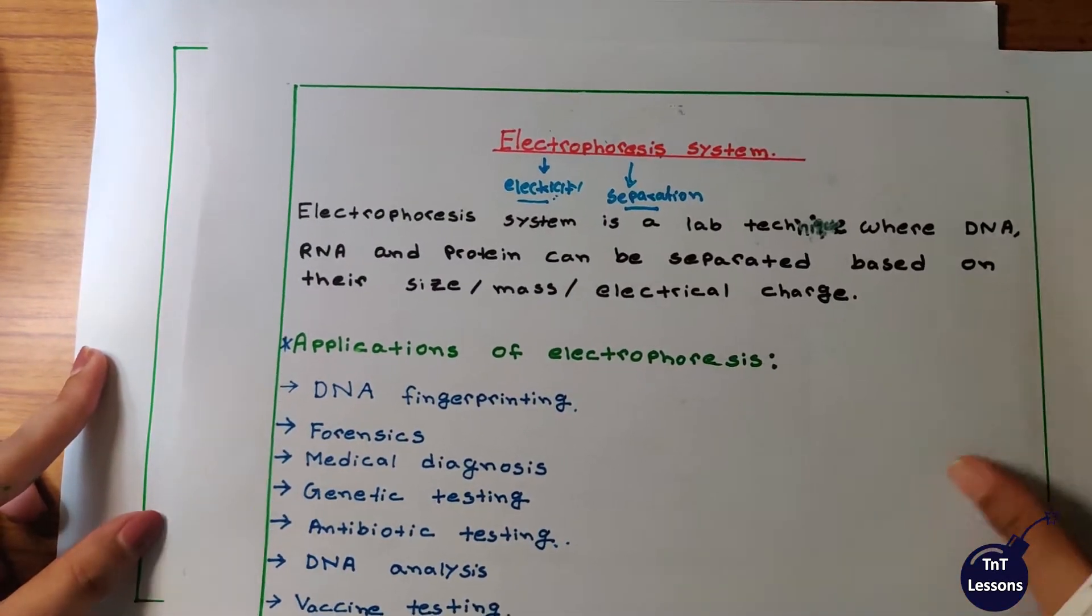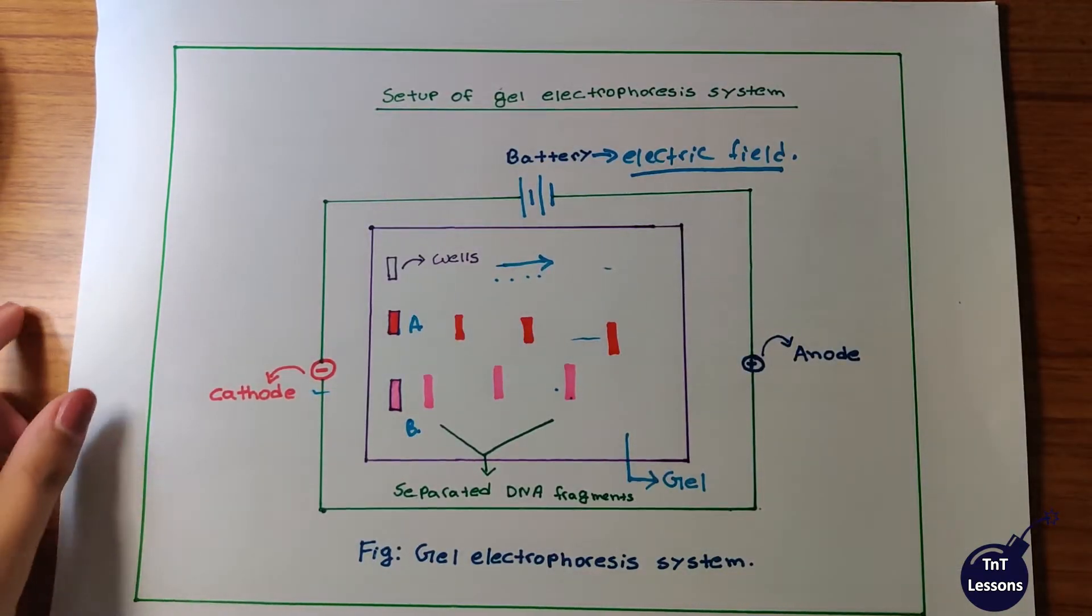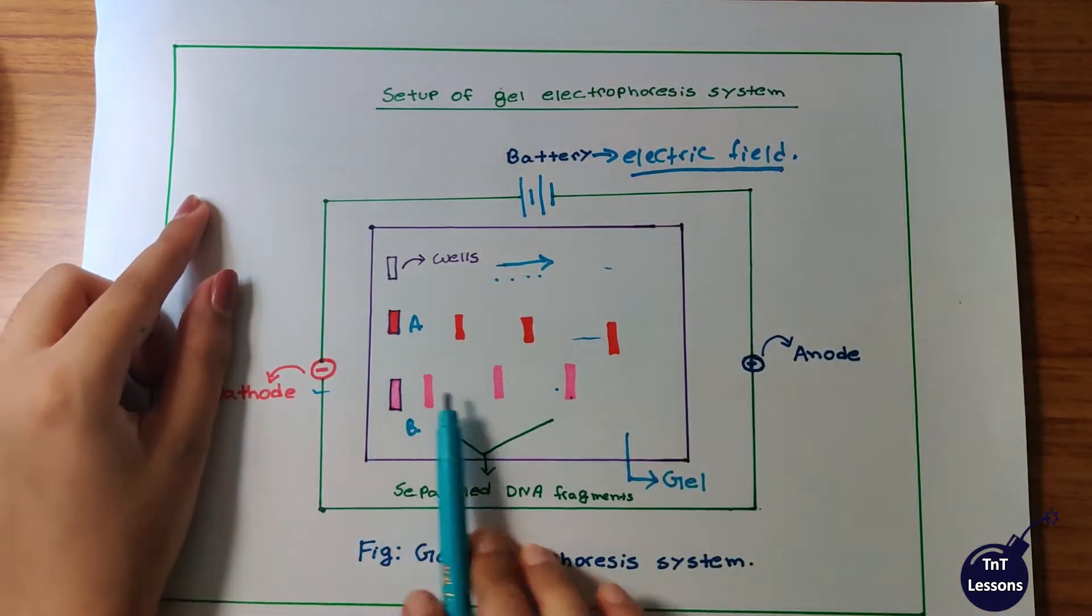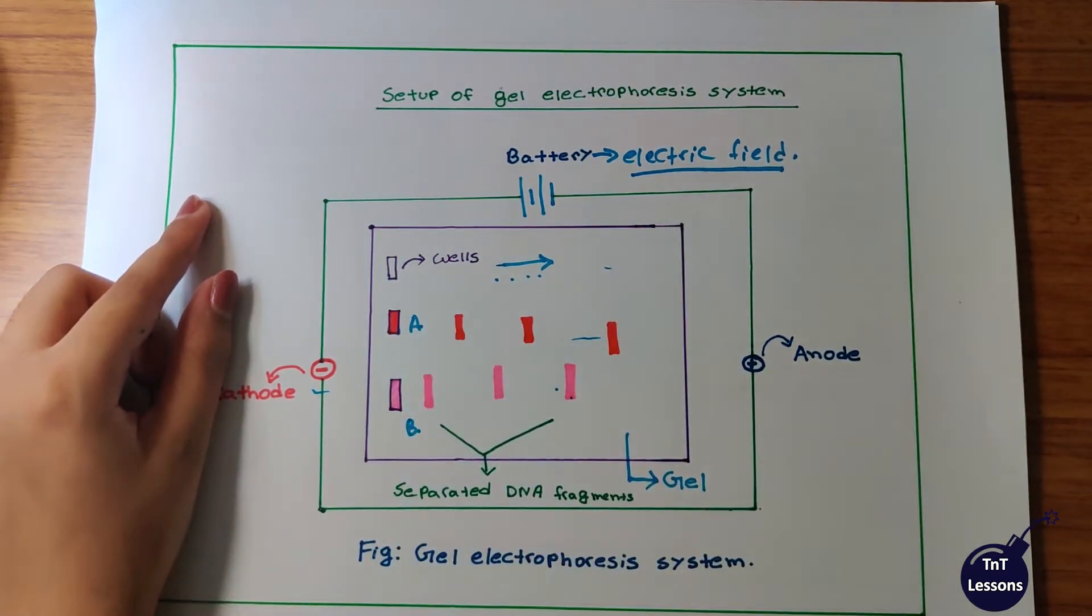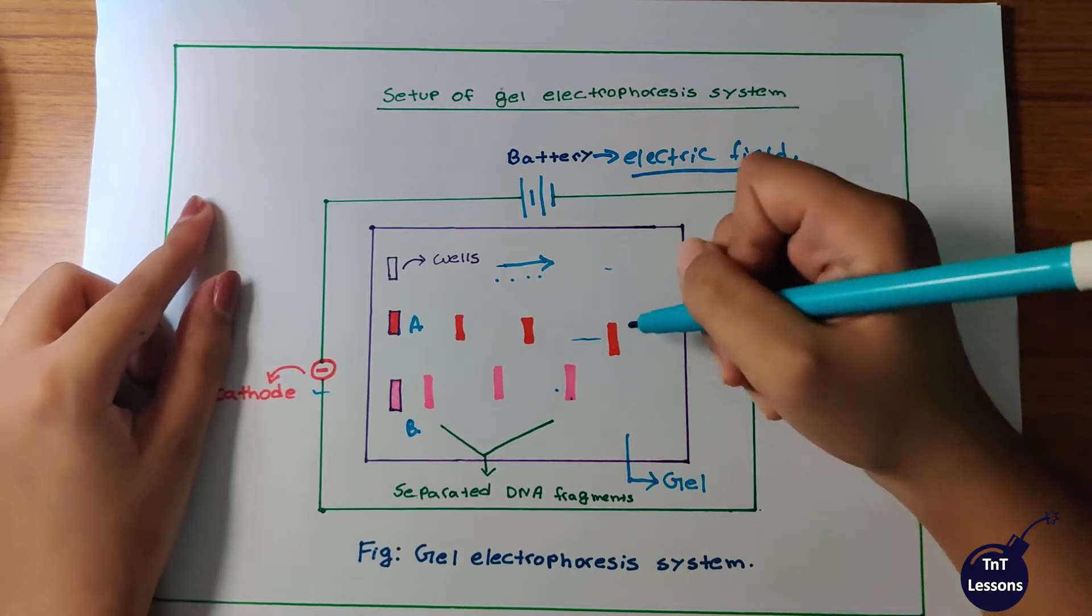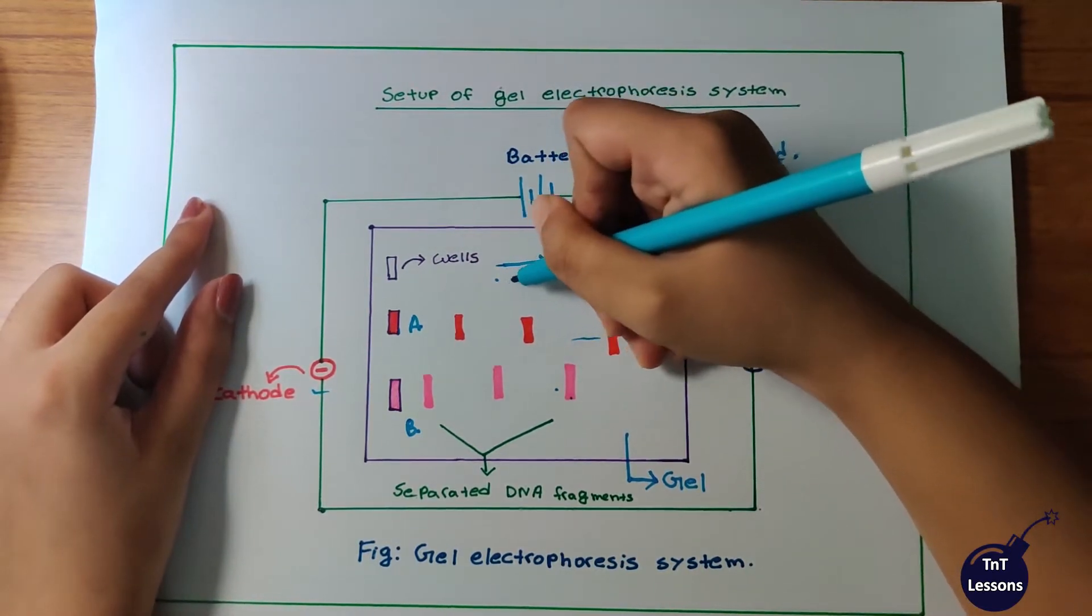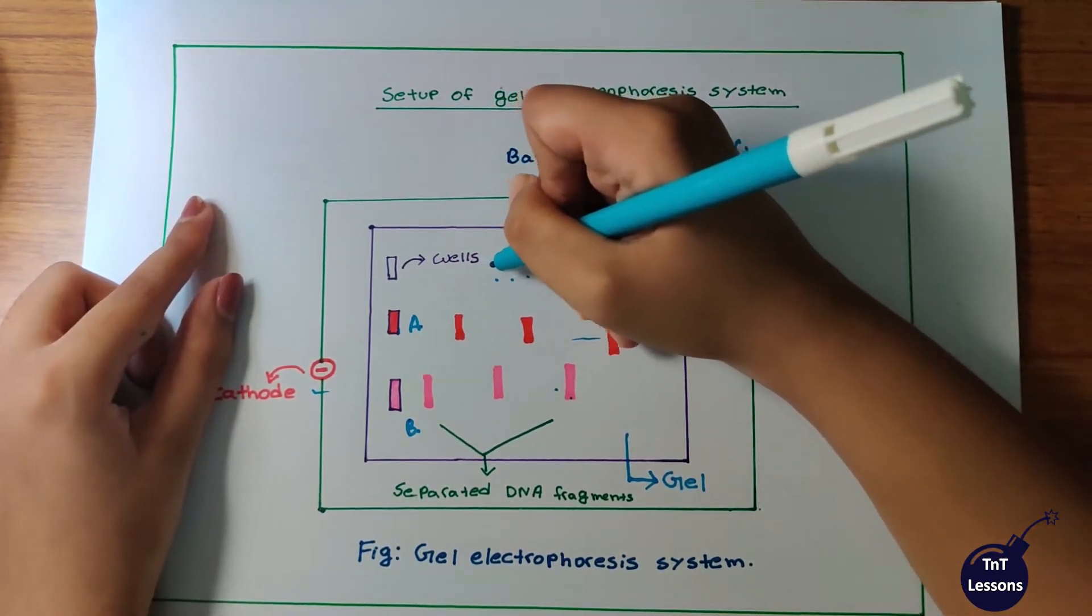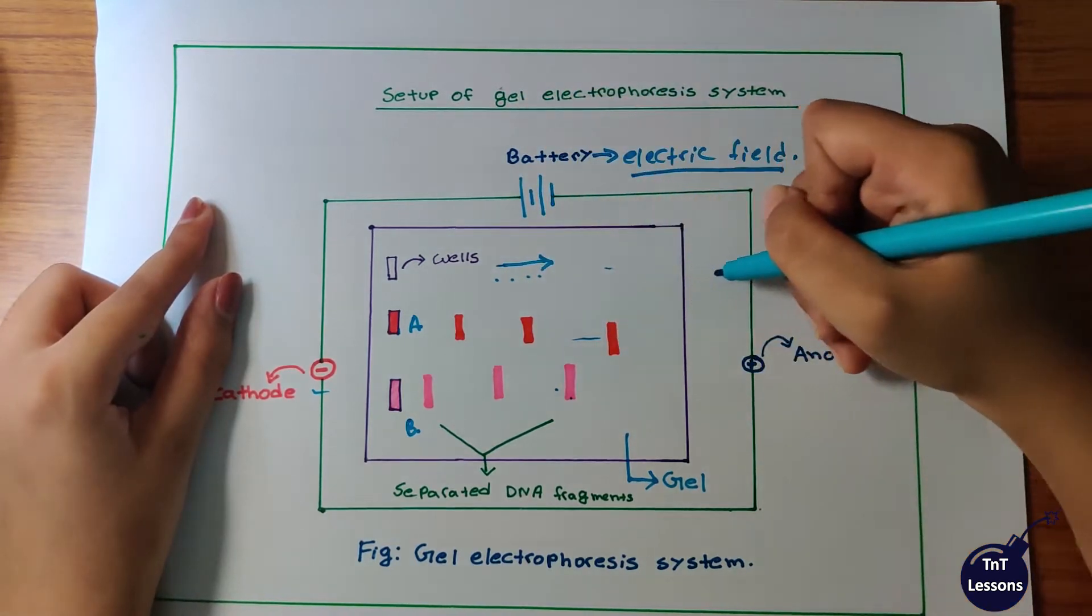Now we can see the gel electrophoresis system. We can see the first rectangular region. This rectangular region is agarose gel. It has small pores, and biomolecules travel through this gel.